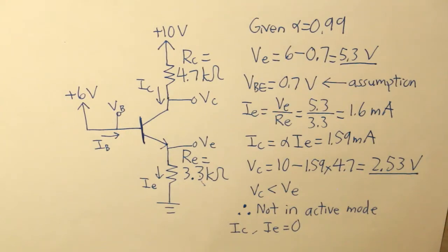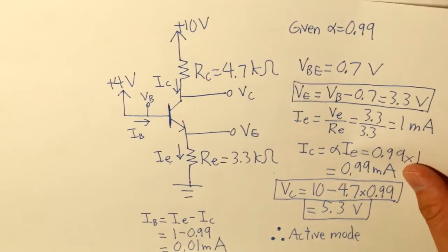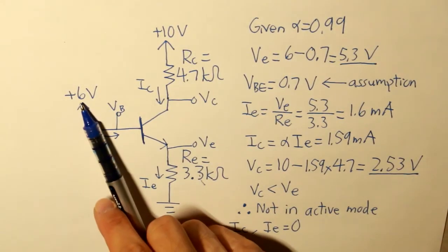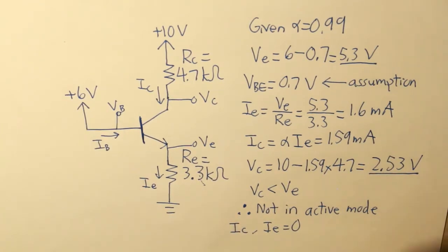One where the BJT is in active mode, and one that is not in active mode. And it all depended on our base voltage. So our base voltage really dictates whether or not the BJT will be open or not. I hope you guys enjoyed this video, and I will see you next time.